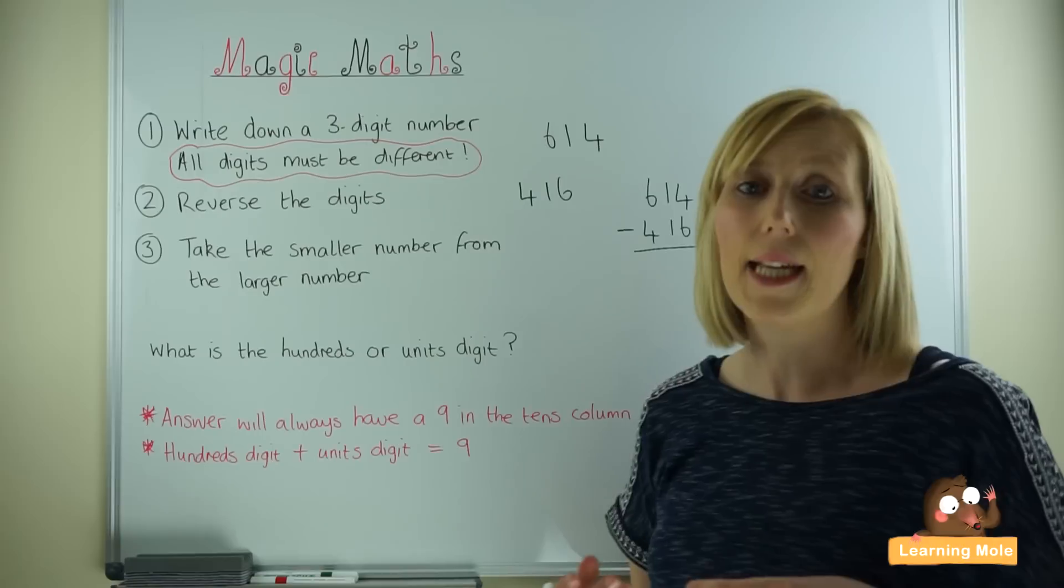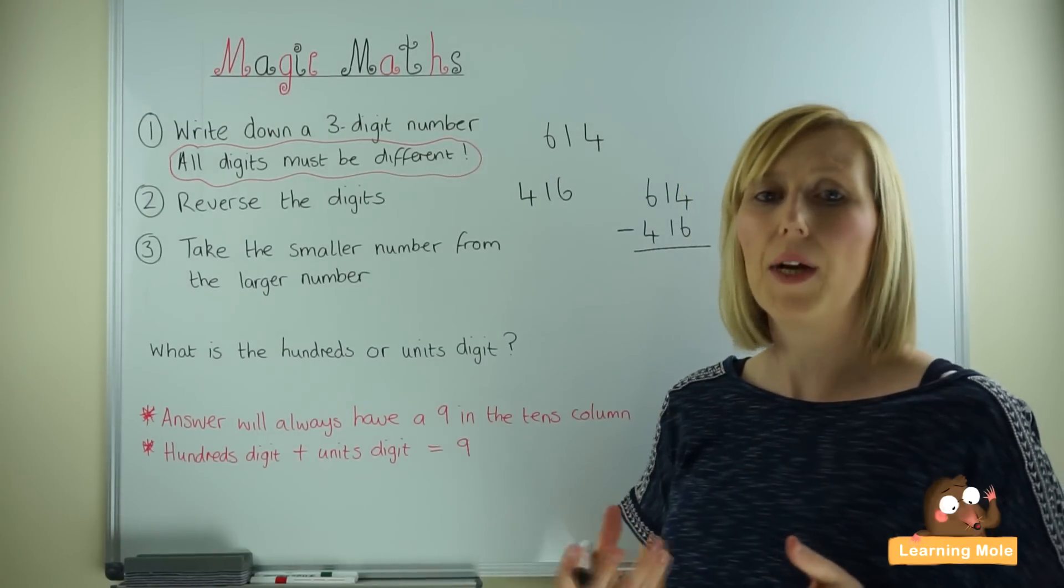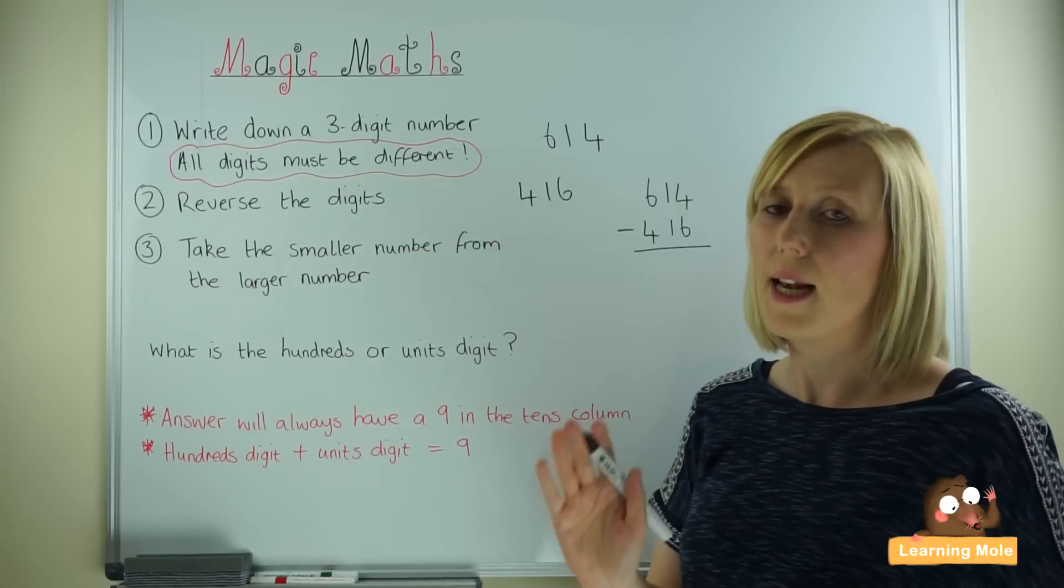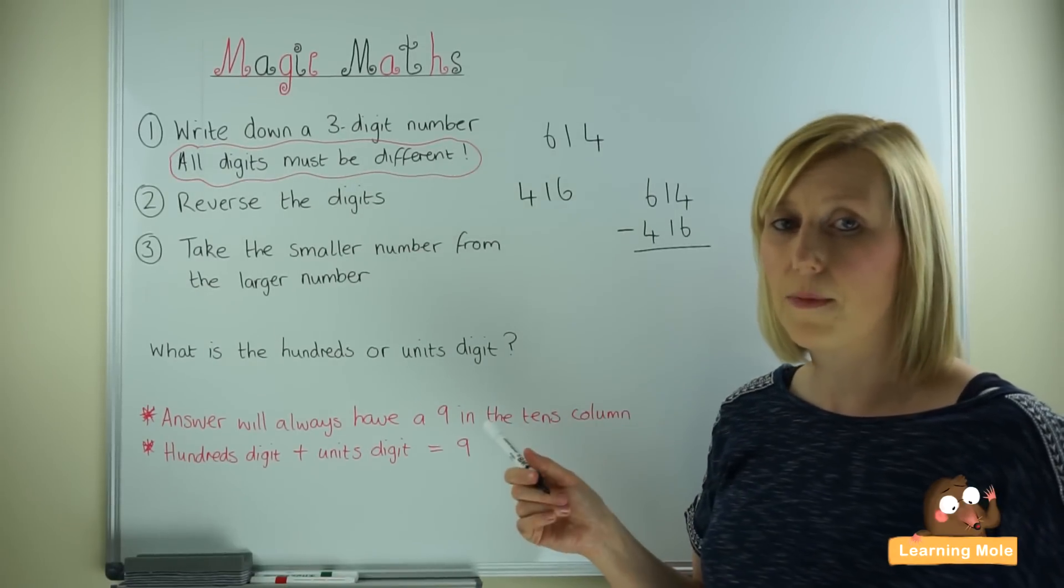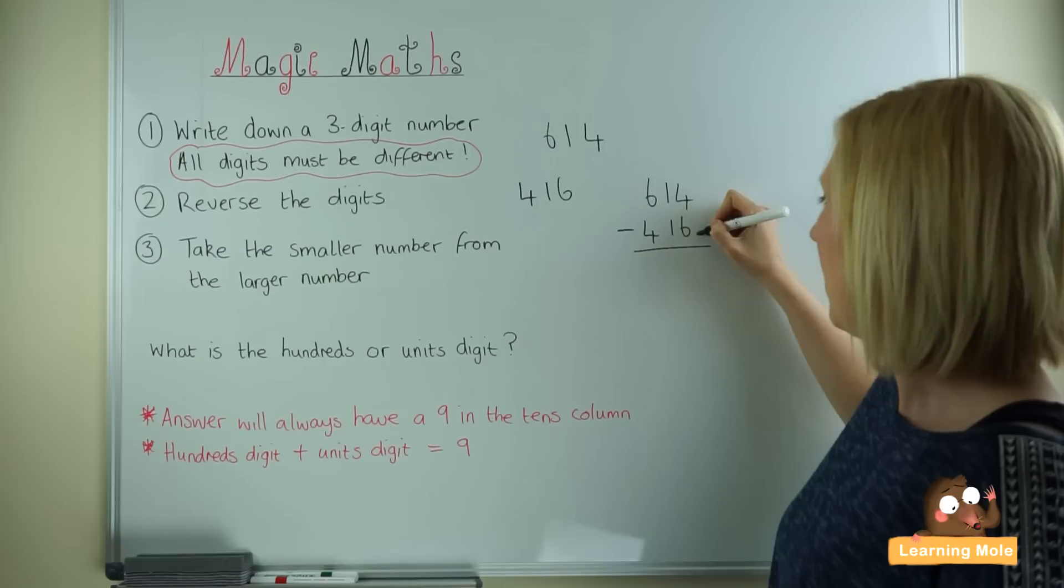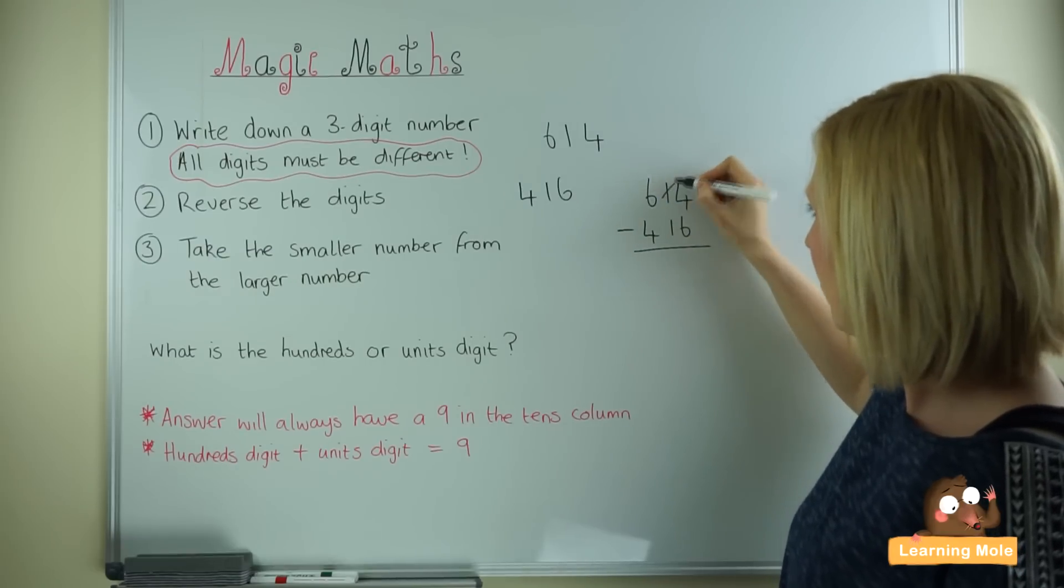You will also be reminding your child when they're having a go at working this out that their columns need to be lined up properly in order to subtract accurately. So 4 take away 6 we cannot do so we have to borrow. 14 take away 6 is 8.